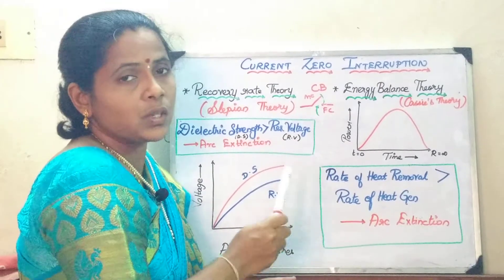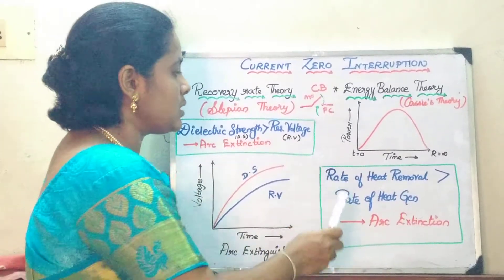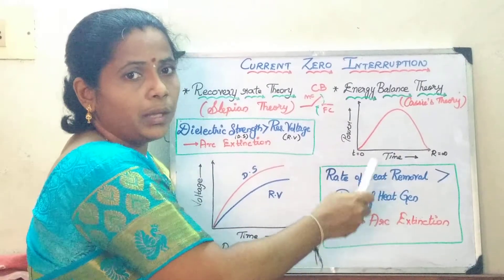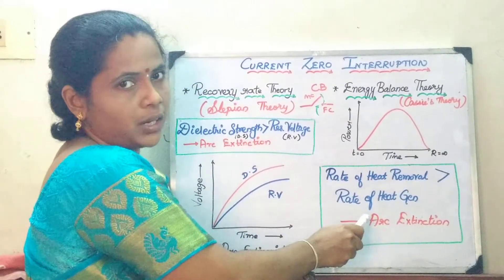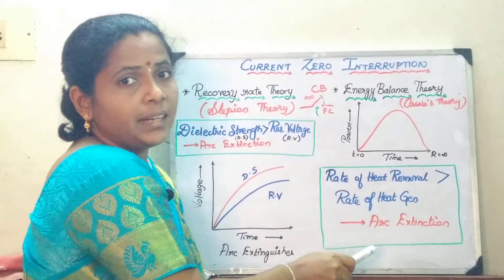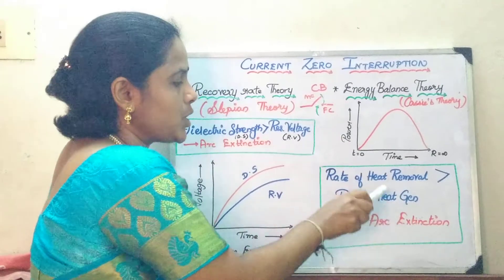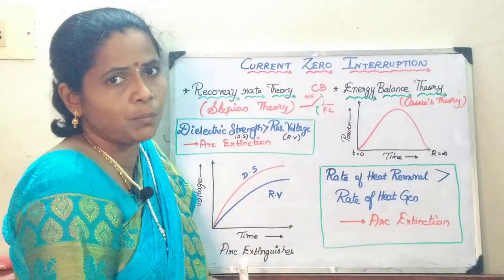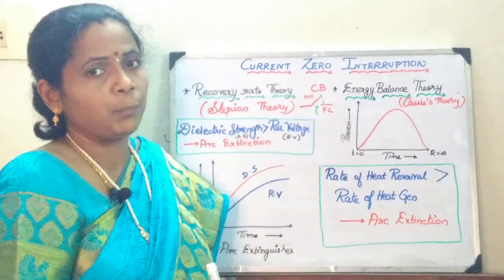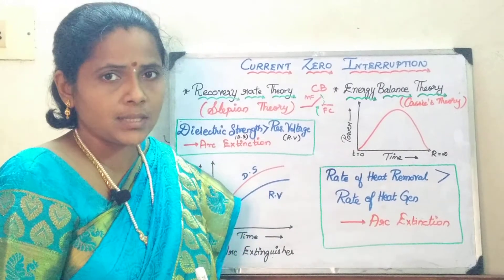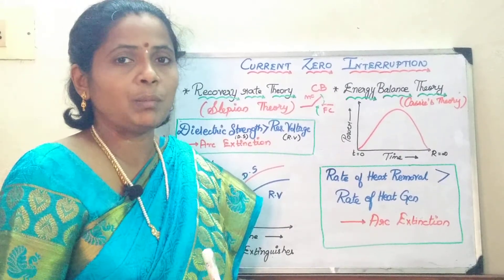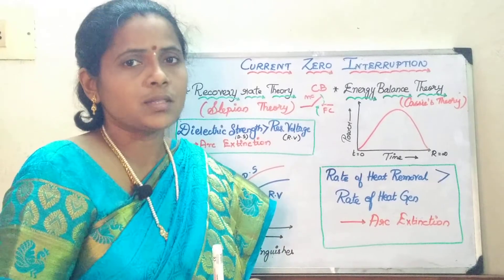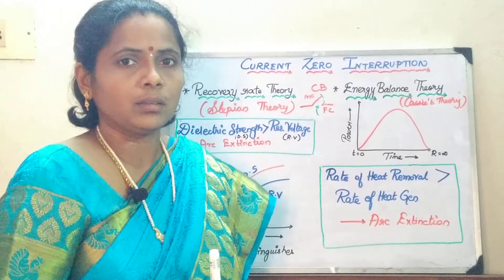This energy balance process — where heat energy removal is greater than heat generation, facilitating the arc extinction process — is what is observed in the energy balance theory. With this, I wind up today's session. In the next session, we will be seeing some important terms related to circuit breakers. Thank you.